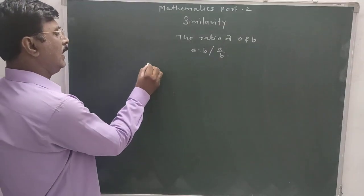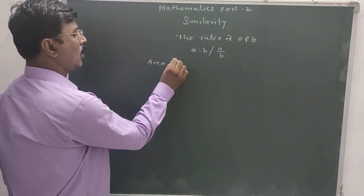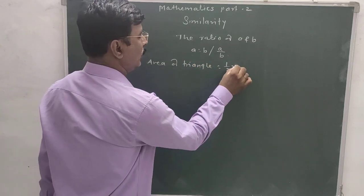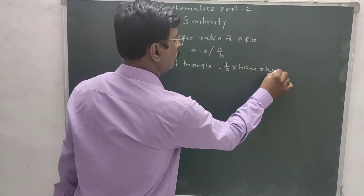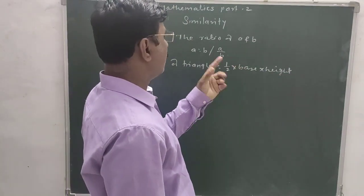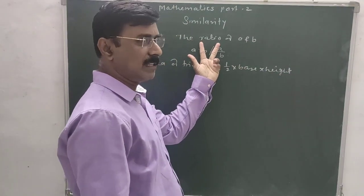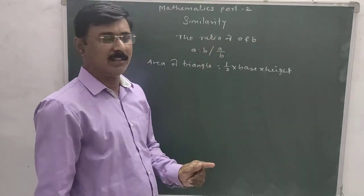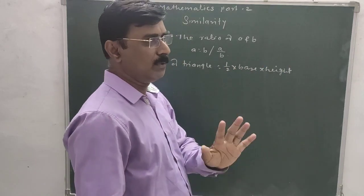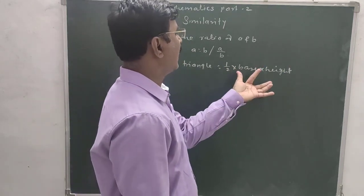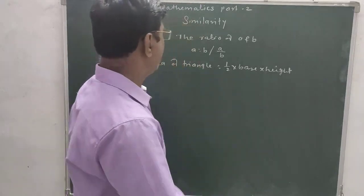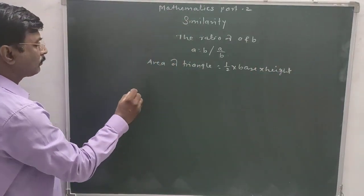The area of a triangle is equal to one-half into base into height. In this chapter we need to know the ratio and the area of a triangle, which is one-half multiplied by base multiplied by height.